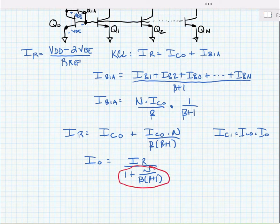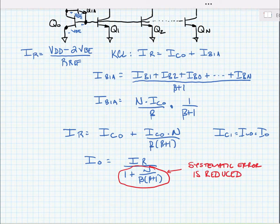We still have a systematic error, but you'll notice that the systematic error is reduced by this factor beta times beta plus 1, and this is why this is called a beta helper.